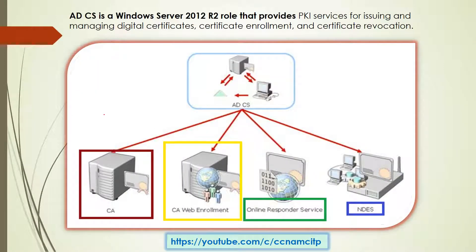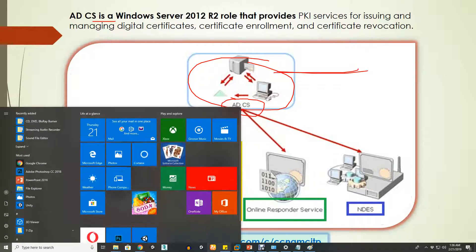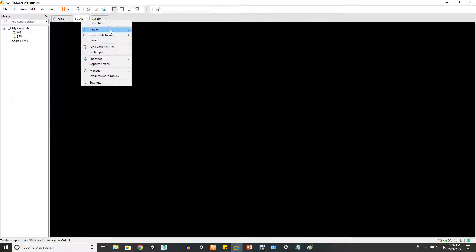Active Directory Certificate Services is a Windows Server 2012 R2 role that provides PKI services — basically it is a role installed on Active Directory. We can install it on Active Directory. I have two servers here.